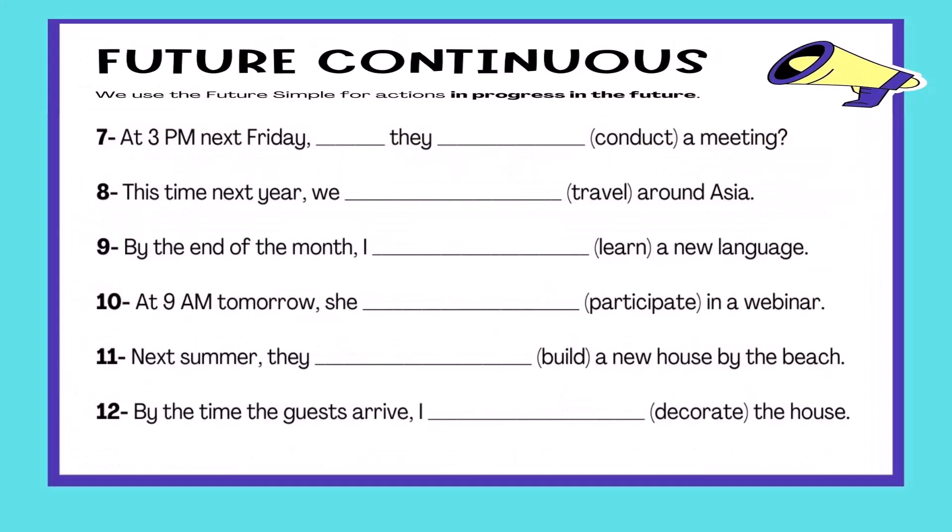Number seven: At 3pm next Friday, ___ they ___ (conduct) a meeting? Number eight: This time next year, we ___ (travel) around Asia. Number nine: Next summer, they ___ (build) a new house by the beach.